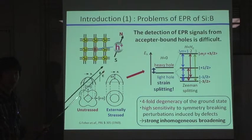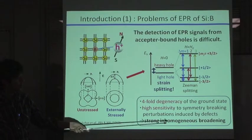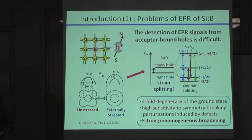This splitting is induced even by very tiny strain fields. Now, in our actual sample, there exists a lot of point defects or dislocations. So, this means that every acceptor feels a slightly different strain field, one by one. As a result, the EPR signals from acceptor-bound holes is strongly inhomogeneously broadened.